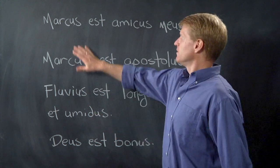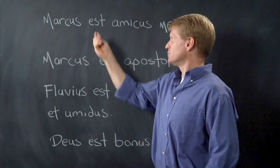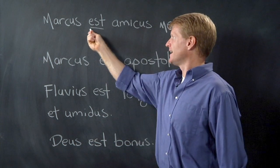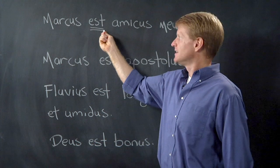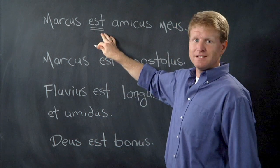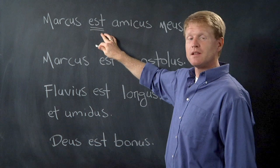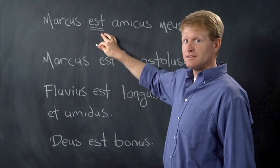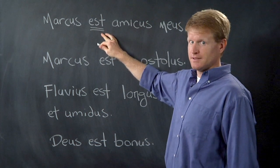So here we go: Marcus est amicus meus. Now look, there's that verb we talked about — est. It means 'is.' Now it means 'he is,' but remember it can also mean 'there is,' or it can mean just plain old 'is.'